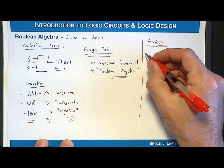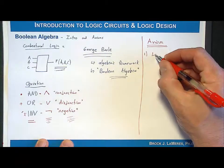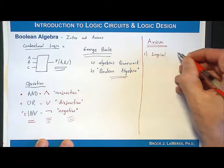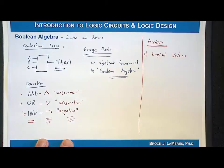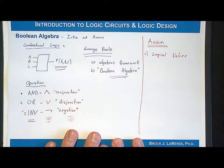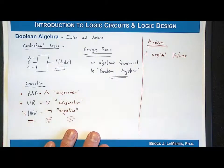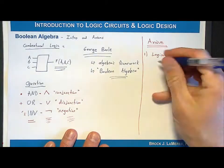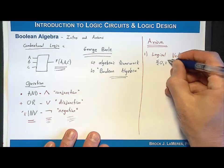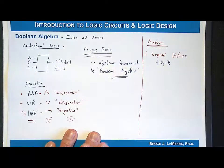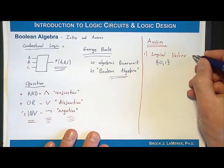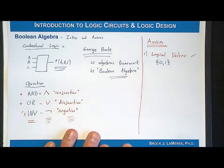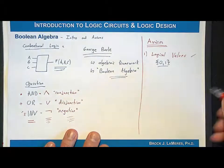The first axiom is the logical values axiom. It simply states that in a two-valued number system or Boolean algebraic framework, there can be only two values: zero and one. Any variable, any signal can only take on a one or a zero. If you say you're using Boolean algebra, you immediately accept that any variable can only take on a zero or one.